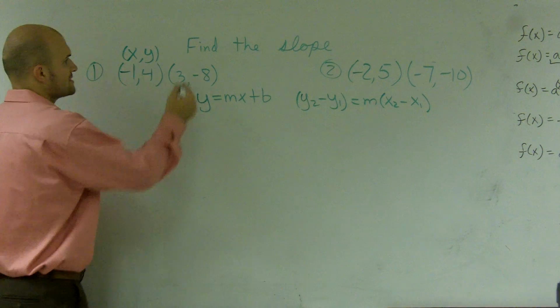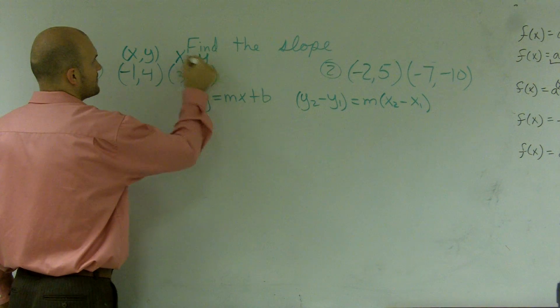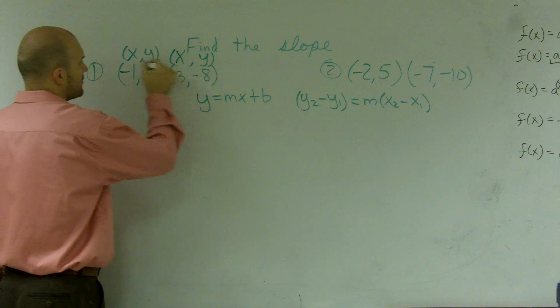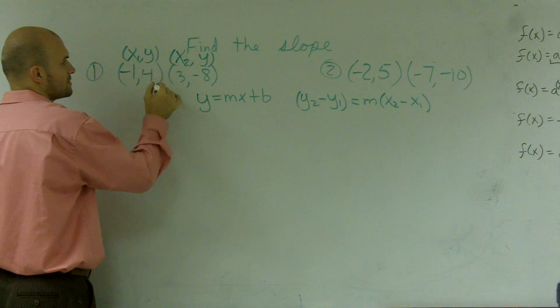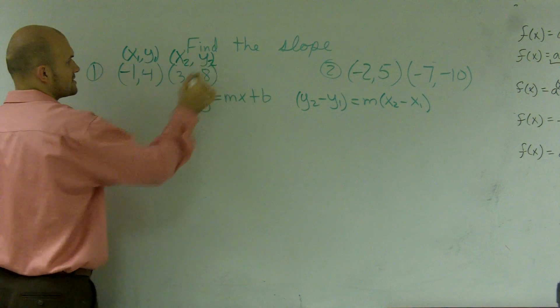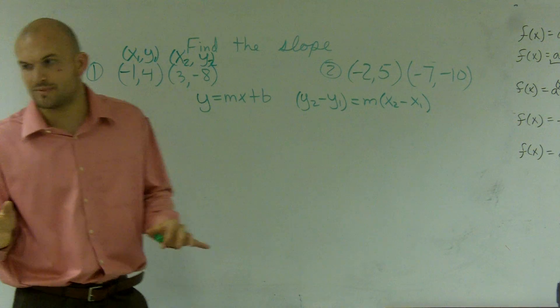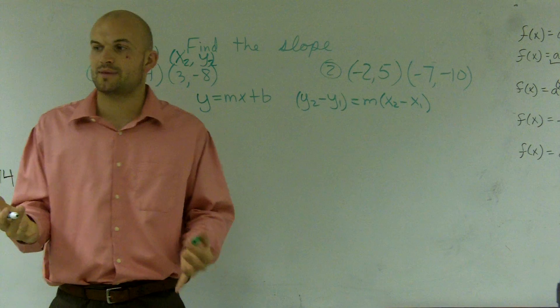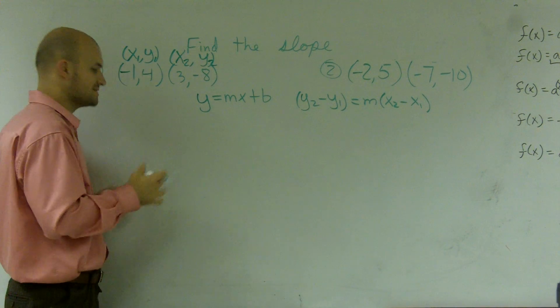So what I'm going to do is label the points by putting subscript 1 and subscript 2. Now, it doesn't matter which one you make a 1 and which one you make a 2. You just have to make sure you're consistent.